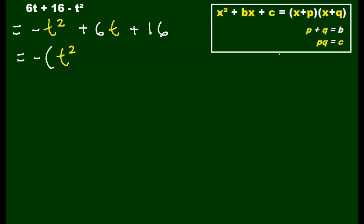So I have negative times t squared. Note that because I have a negative on the outside of my parentheses, I have to change all my signs on the inside to the opposite sign. So my positive 6t now becomes a negative 6t. My positive 16 becomes a negative 16. And now we have it in the form that we want.